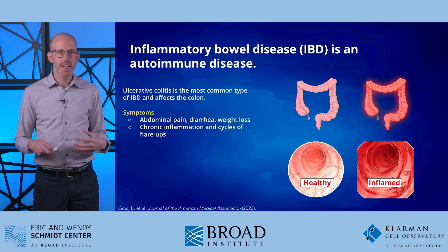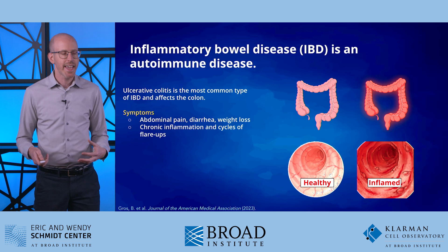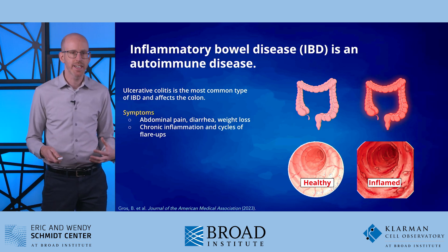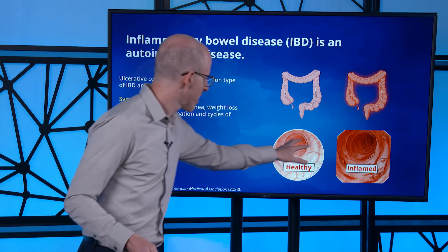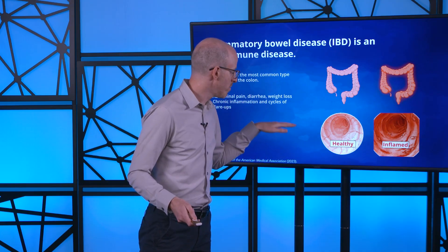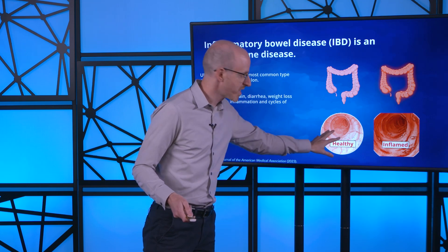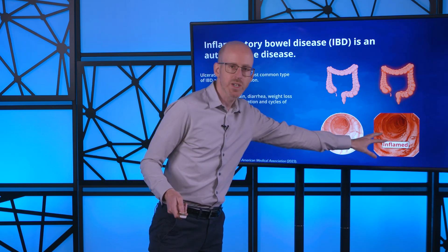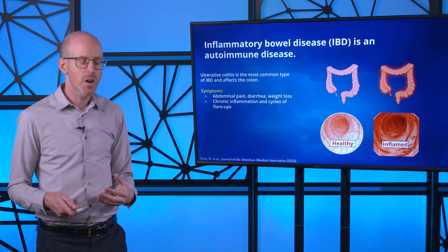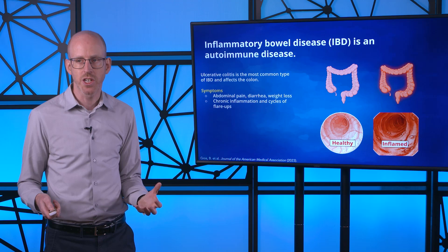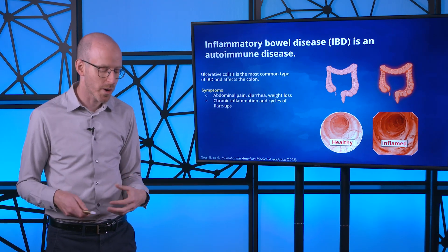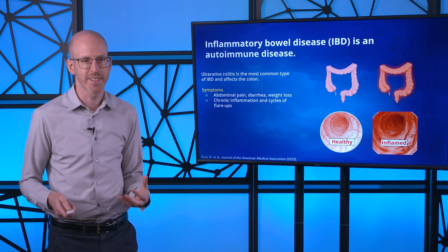During ulcerative colitis, there's inflammation in the colon, and the symptoms include things like abdominal pain, diarrhea, and weight loss. On the lower right here, we're seeing a colonoscopy, where a doctor can take a tube with a camera and put it into the colon. On the left, we're seeing healthy colon, and on the right, we're seeing inflamed colon — it looks red and kind of unhappy. Ulcerative colitis is really characterized by chronic inflammation, in combination with cycles of flare-ups where there's more acute inflammation and very noticeably bad symptoms.